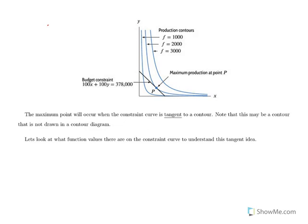The maximum point is at point P, and what happens is that the constraint curve — that contour of G — is going to be tangent to a contour of F. The constraint curve is tangent to a contour of F when the black line is tangent to one of the blue contour lines. Note that there are infinitely many contours you could draw, and you may not have drawn the specific one that gives the tangential point — that doesn't mean it doesn't exist.